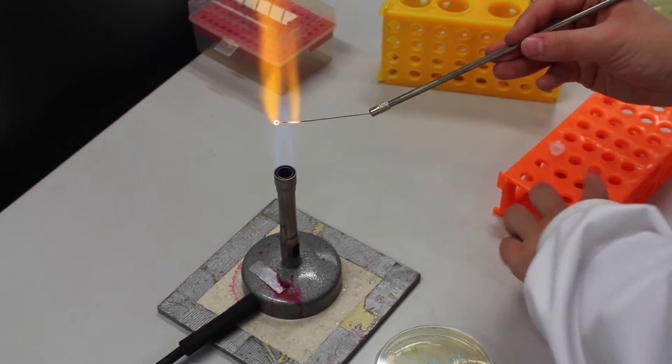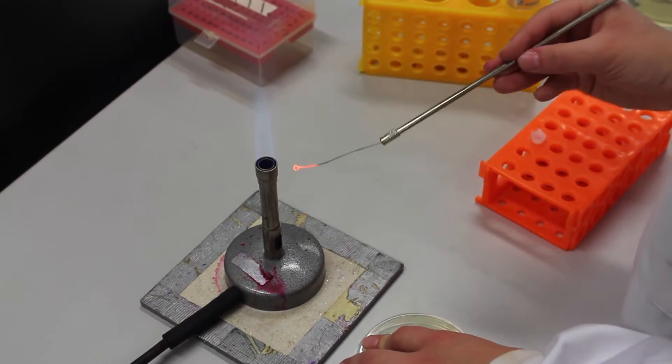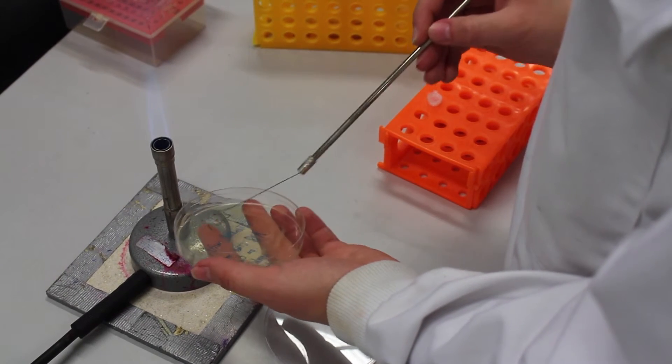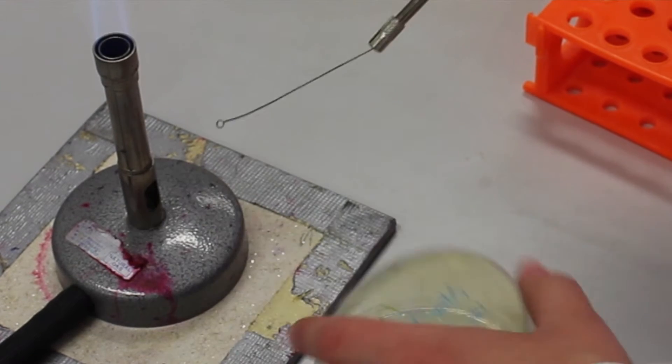The inoculation loop is sterilized by passing it through the hottest part of the flame. The inoculation loop is cooled on a separate part of agar that doesn't contain colonies before being used to scoop up a colony.